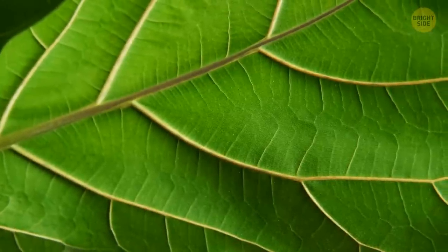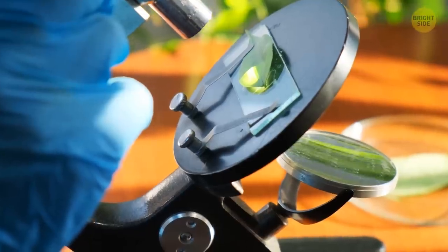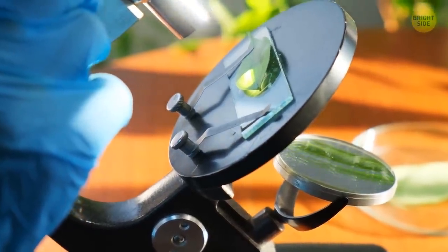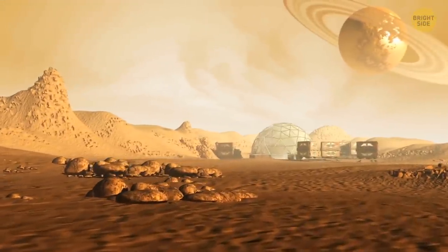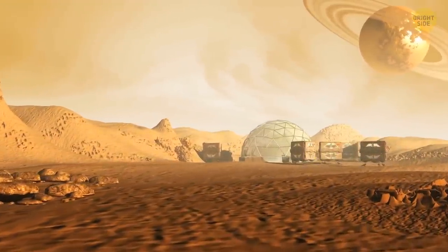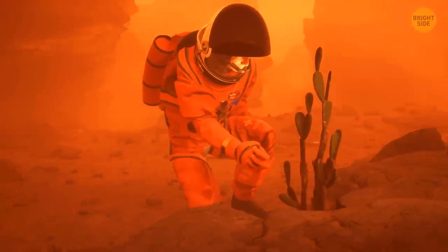It's important to understand how photosynthesis is controlled, because it may be used beyond just studying diseases. For example, if we ever live on another planet, we will need to grow food indoors, and create a way to make sure the plants get enough light to grow.